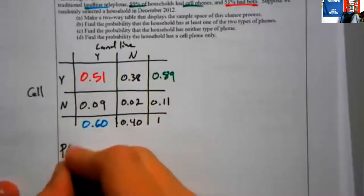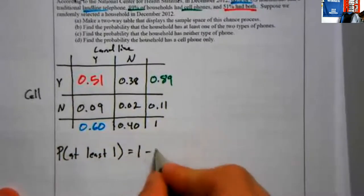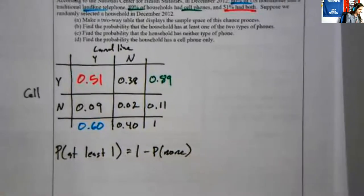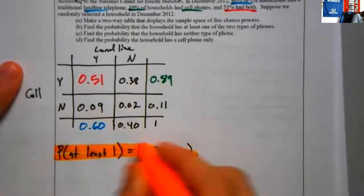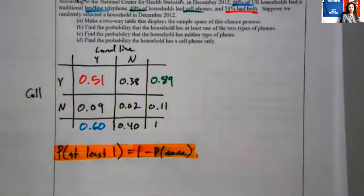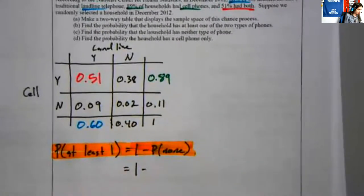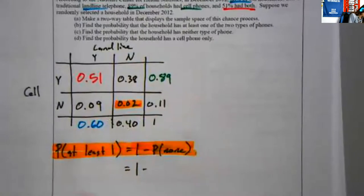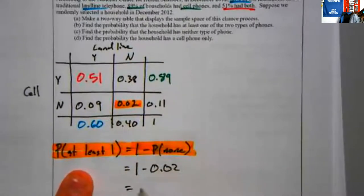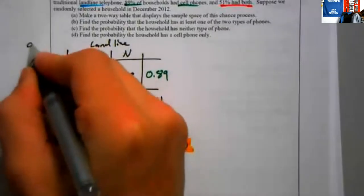Part B asks us to find the probability they have at least one of the two types of phone. Write this down — this is a big idea: the probability of at least one is one minus the probability of none. You're going to see this over and over. The probability of at least one becomes 1 minus who didn't have any phone at all. The people who didn't have any phone at all is 0.02. So 1 − 0.02: the probability of having at least one type of phone is 98%.